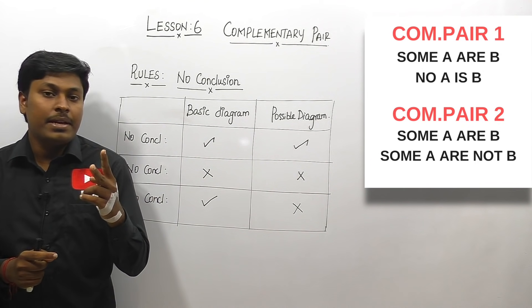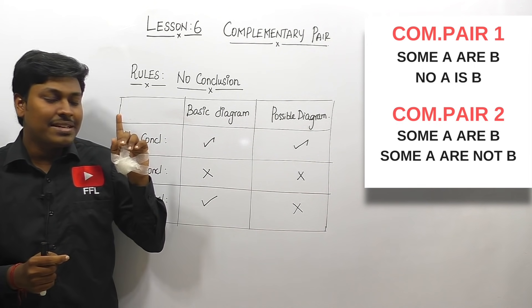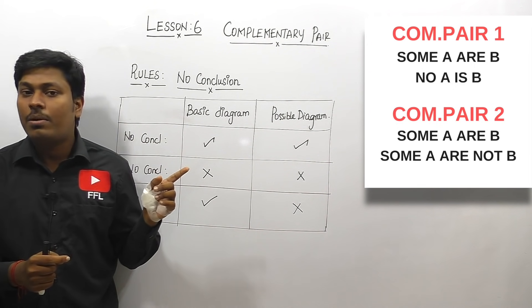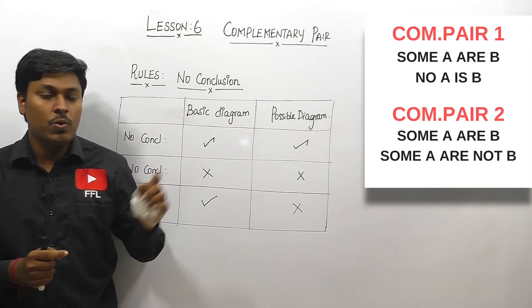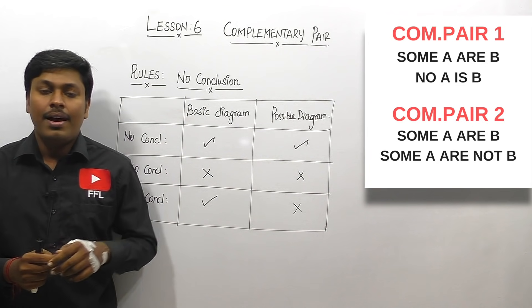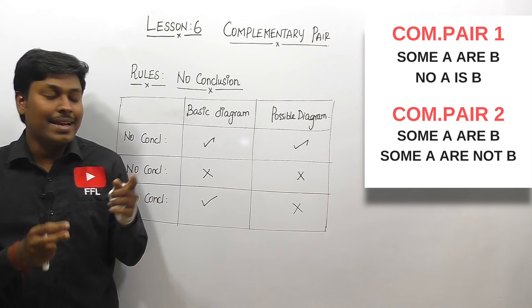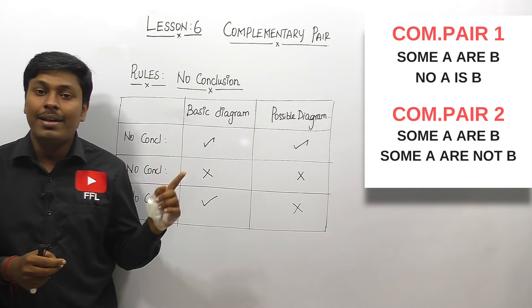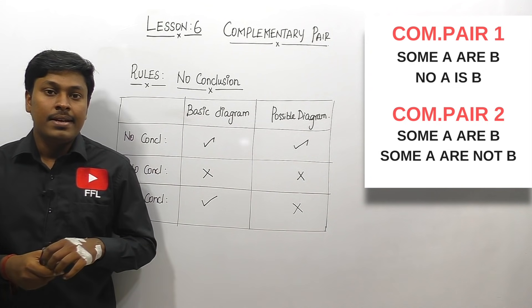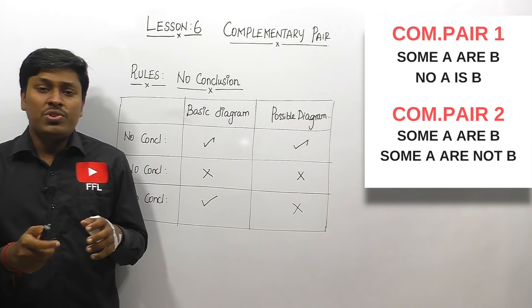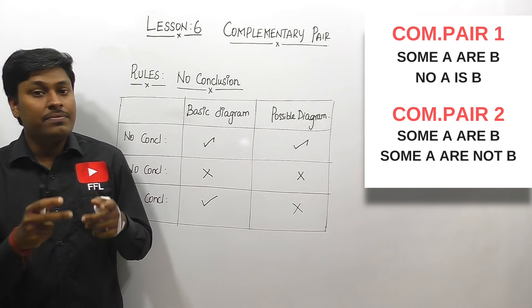So totally there are two complementary pairs in syllogism. In lesson number six we will target the first complementary pair — 'Some A or B' and 'No A is B' — and in lesson number seven we will target the second complementary pair — 'Some A or B' and 'Some A or not B'.